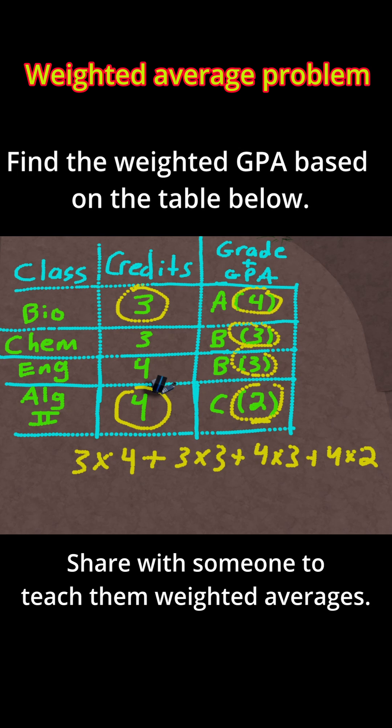Once we have the sum of all those weighted values, you divide by the weights, in which case the weights are the credits. These are all of our weights, so just add up all the credits: 3 plus 3 plus 4 plus 4.